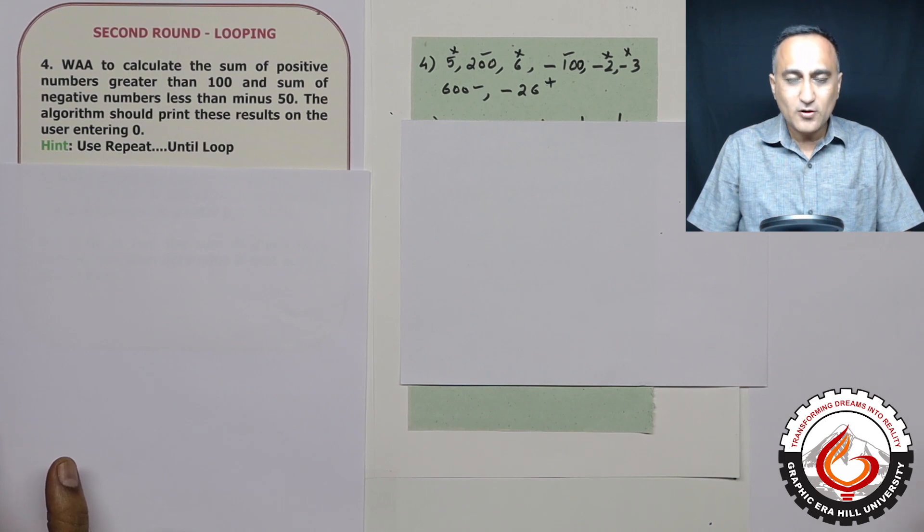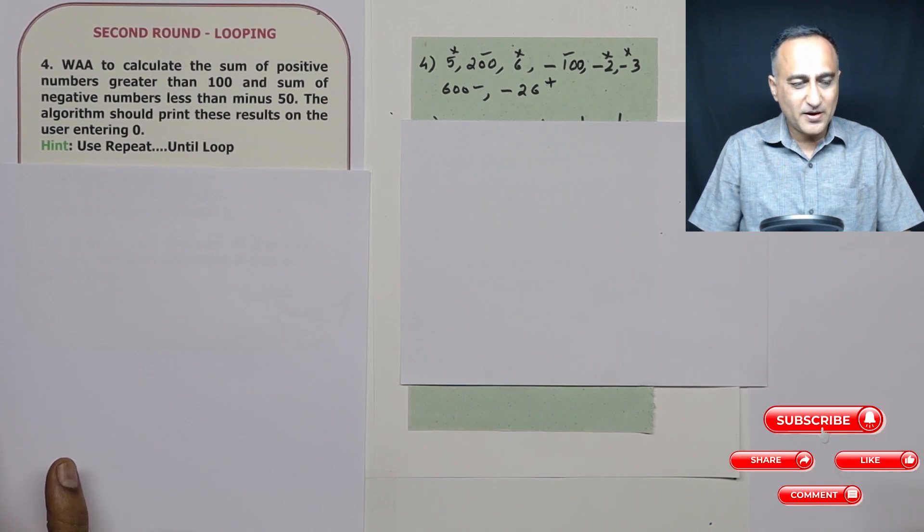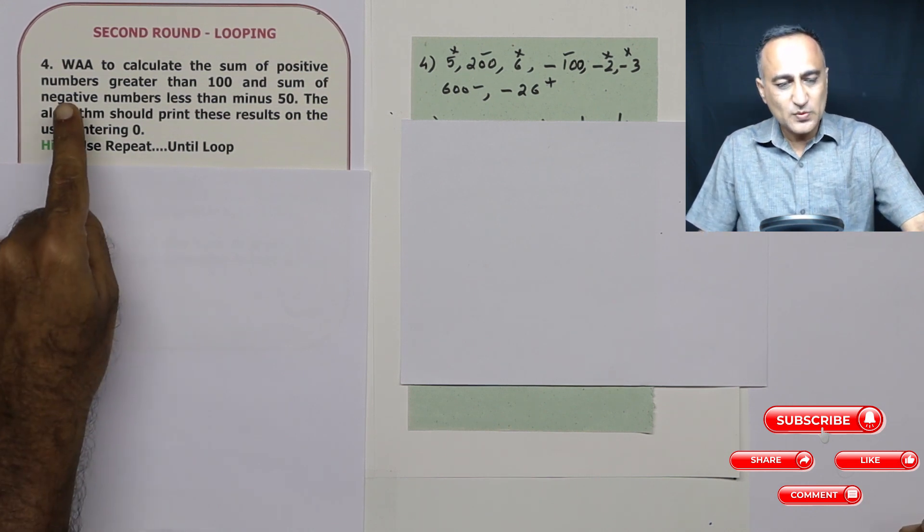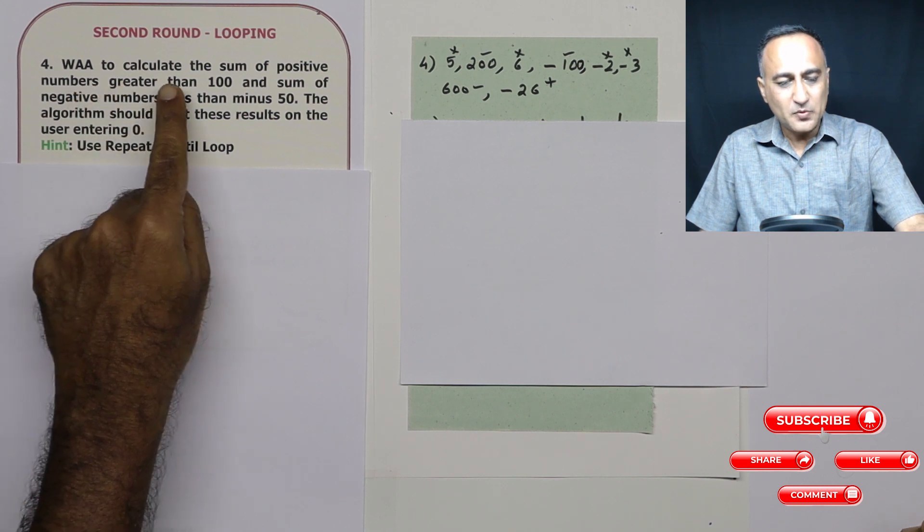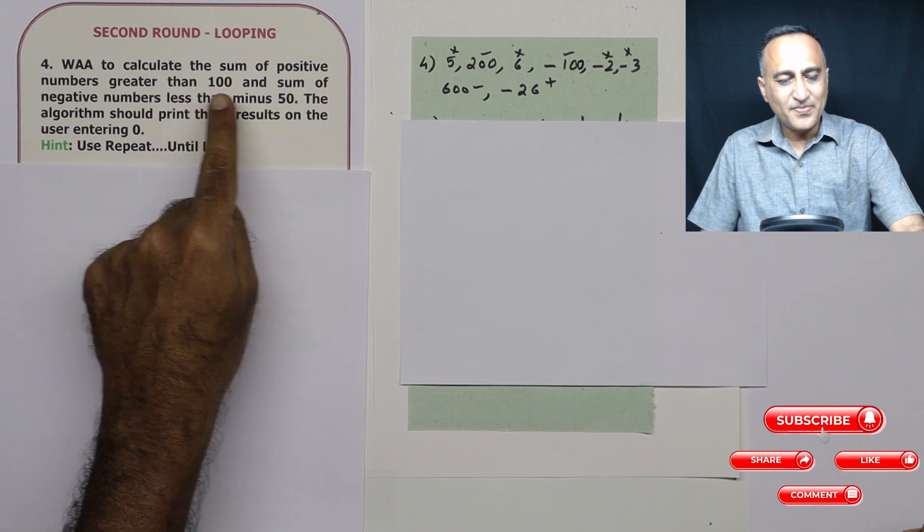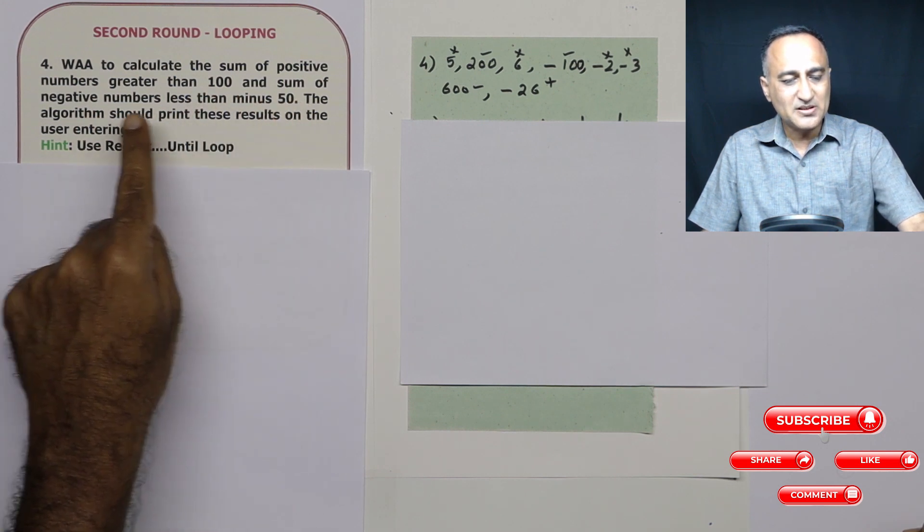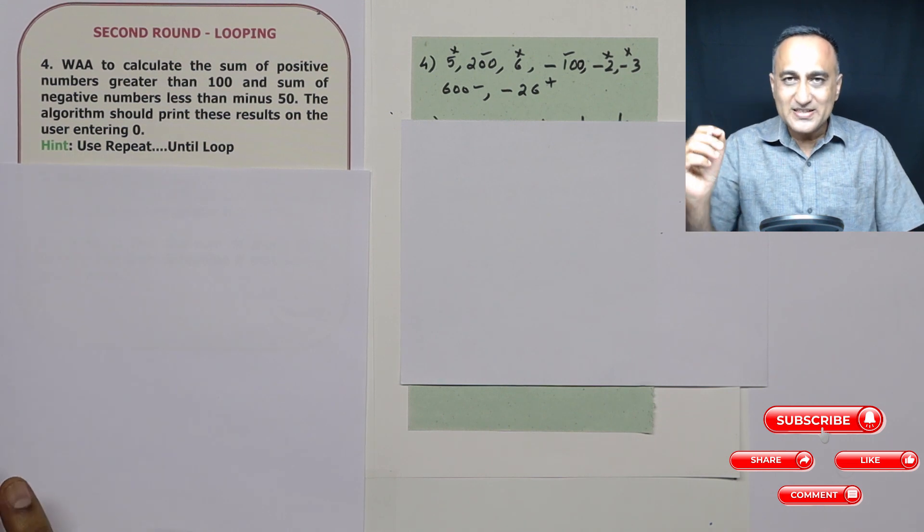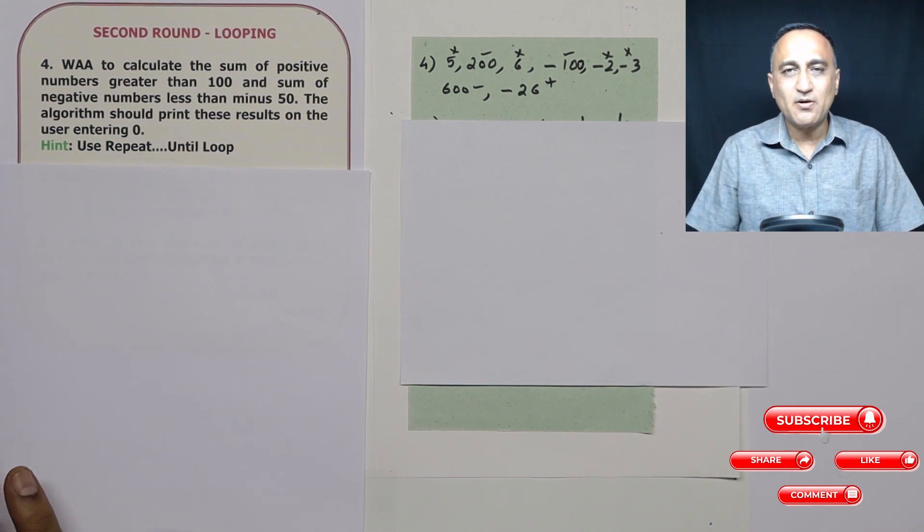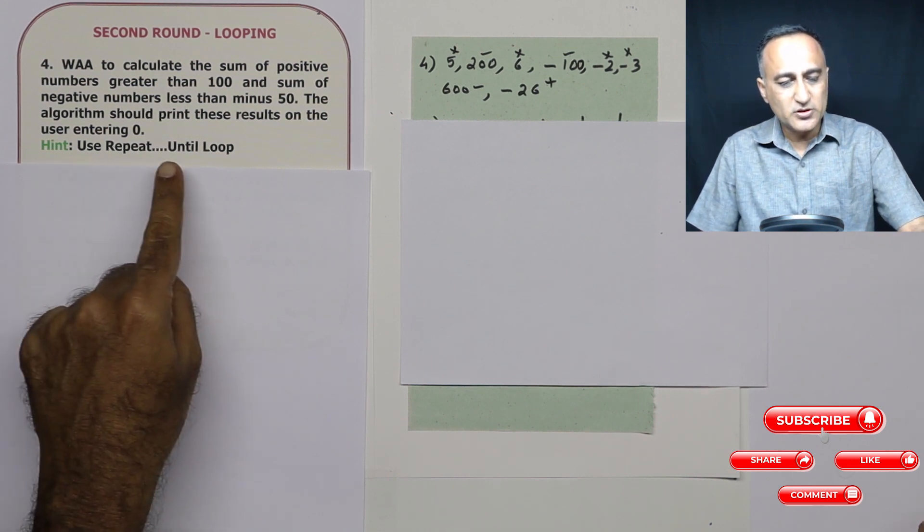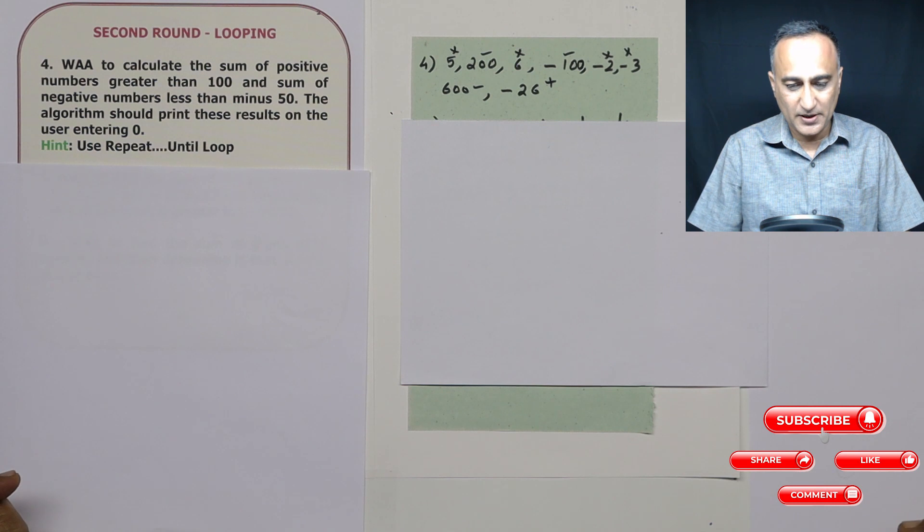This is the second round of looping assignment which consists of three problems. You are required to write the algorithm. The first one says write an algorithm to calculate the sum of positive numbers greater than 100 and the sum of negative numbers less than minus 50. When the user enters zero, you are required to print the sum of positive and sum of negative numbers and use the repeat until loop which I have already explained.